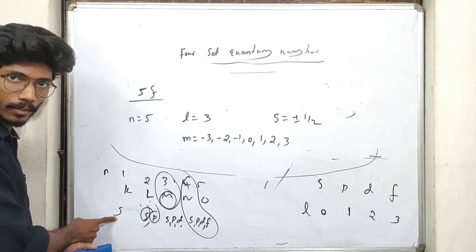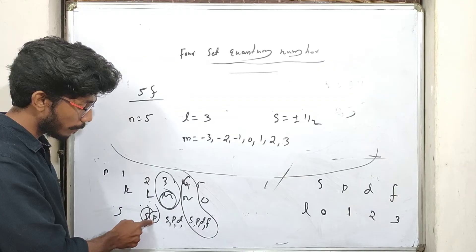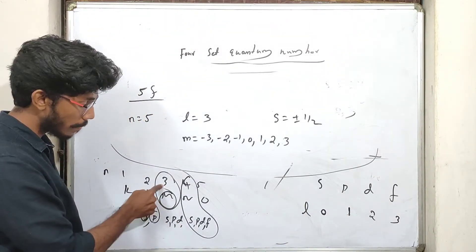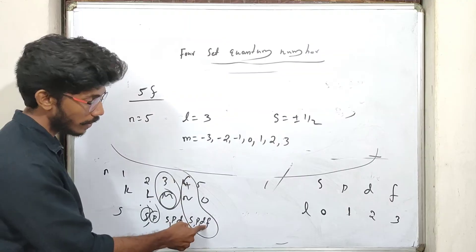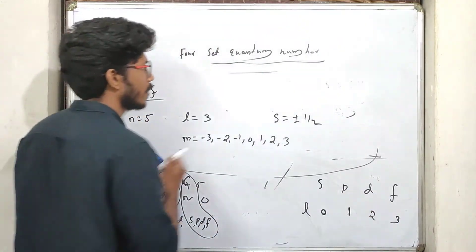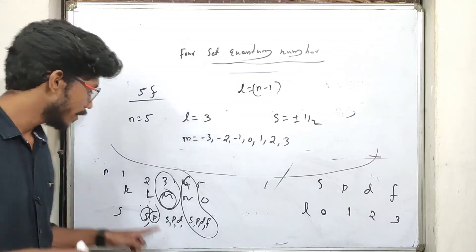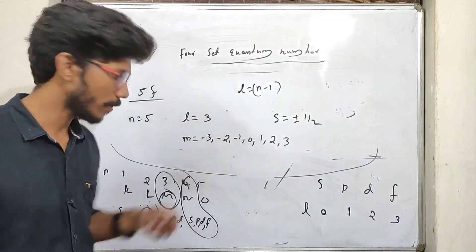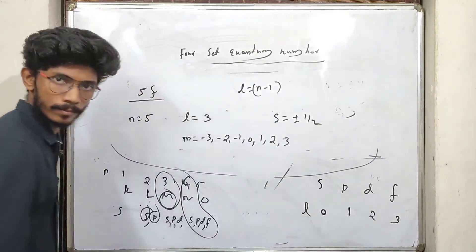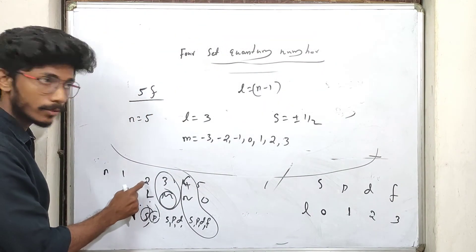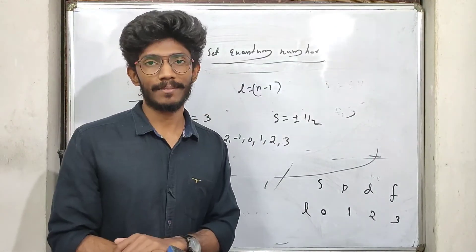Note that s starts with n=1, p starts with n=2, d starts with n=3, and f starts with n=4. For example, 1 minus 1 equals 0, and 2 minus 1 equals 1 — these are the minimum values of l for each subshell.